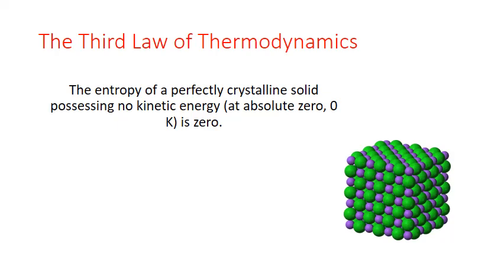At zero Kelvin, the particles that make up the solid are not moving at all. This means there's only one possible location for each particle, and the crystal is defined by a single microstate, resulting in an entropy value of zero. Now, absolute zero is a theoretical temperature — in reality, you'll never have a solid in which the particles aren't vibrating at all. But this theoretical concept provides us with a reference point against which we can calculate the entropies of different substances at other temperatures.